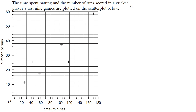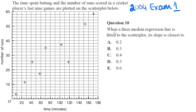Let's do another example. This question appeared in 2004 on exam 1. The question said: the time spent batting and the number of runs scored in a cricket player's last 9 games are plotted on the scatterplot below. The first question asks: when a 3-median regression line is fitted to the scatterplot, its slope is closest to what? There are 9 data points — perfectly divisible by 3 — so we'll put 3 in each group.